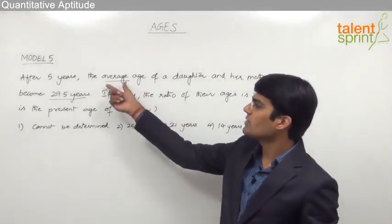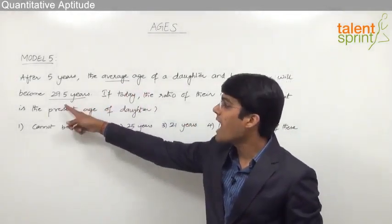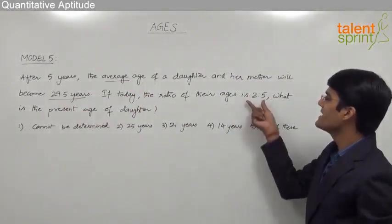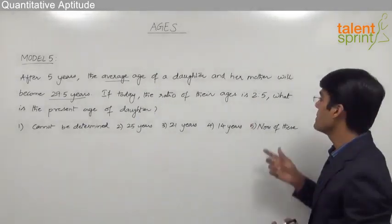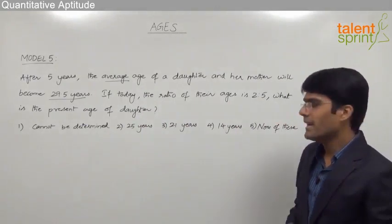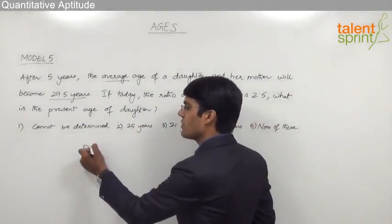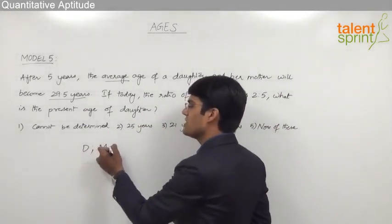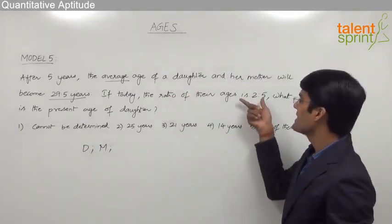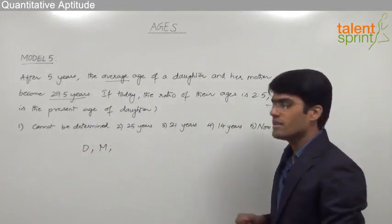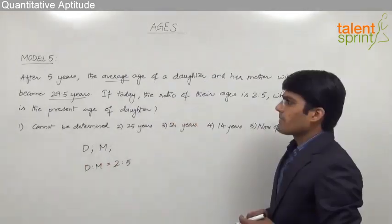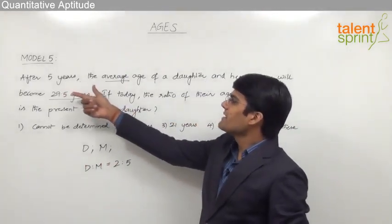We are given the average age of the daughter and mother after five years, that is 29.5, and the present ages are in the ratio 2 is to 5. From this information we need to find the present age of the daughter. Let us assume the present age of daughter is d and the present age of mother is m. The ratio of their present ages is 2 is to 5, so daughter to mother equals 2 to 5.